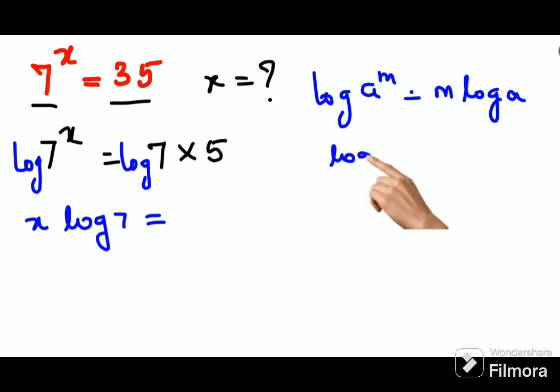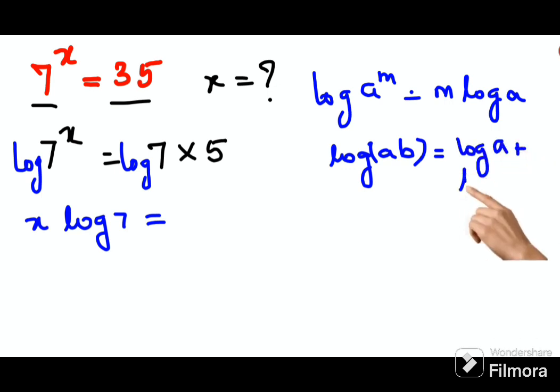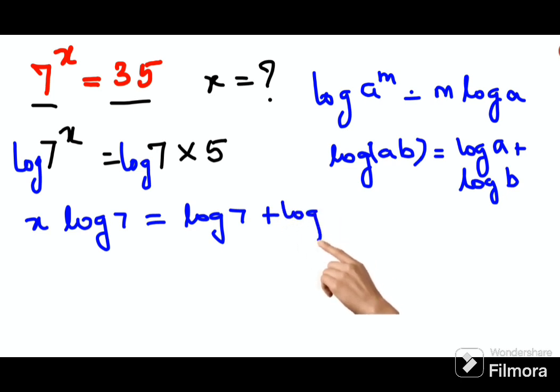log of a into b is equals to log of a plus log of b. So this will now be log of 7 plus log of 5.